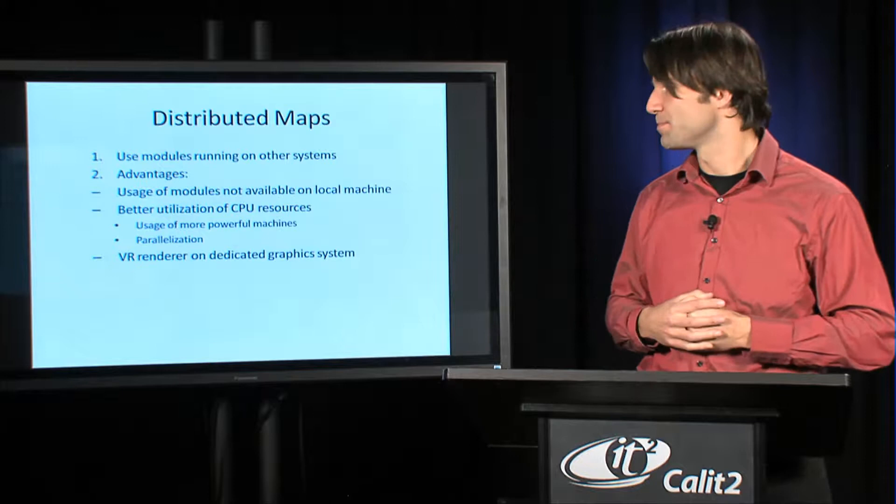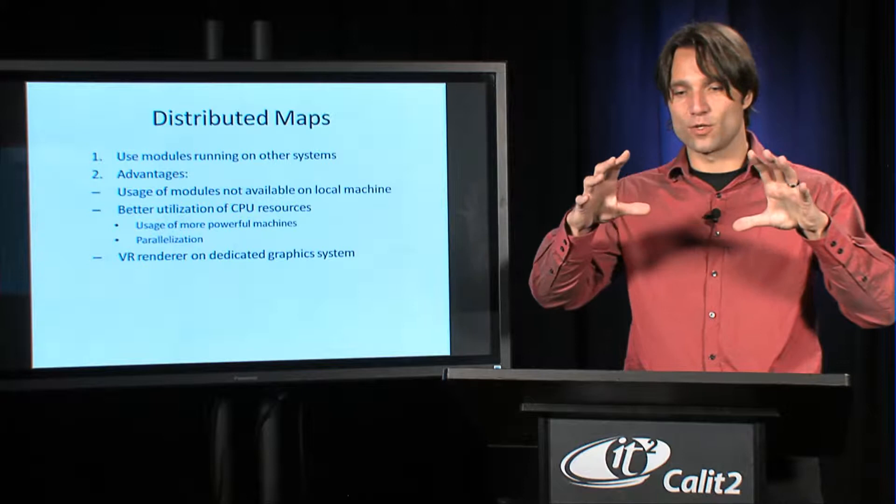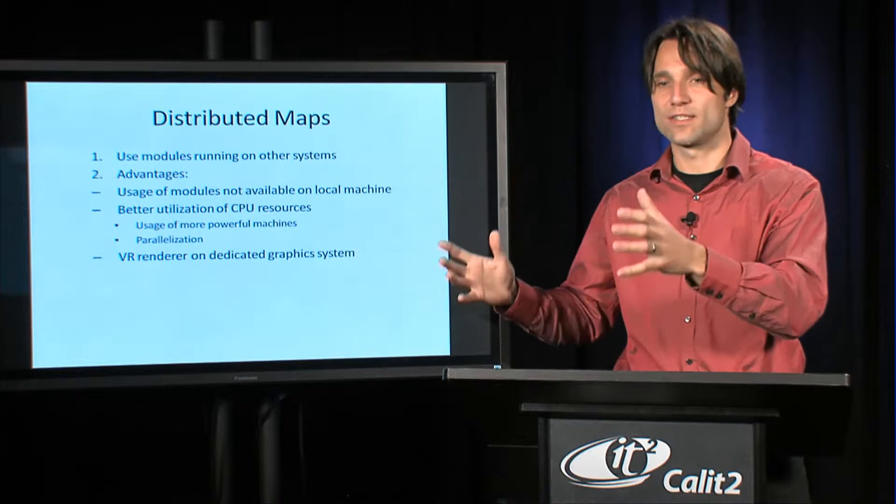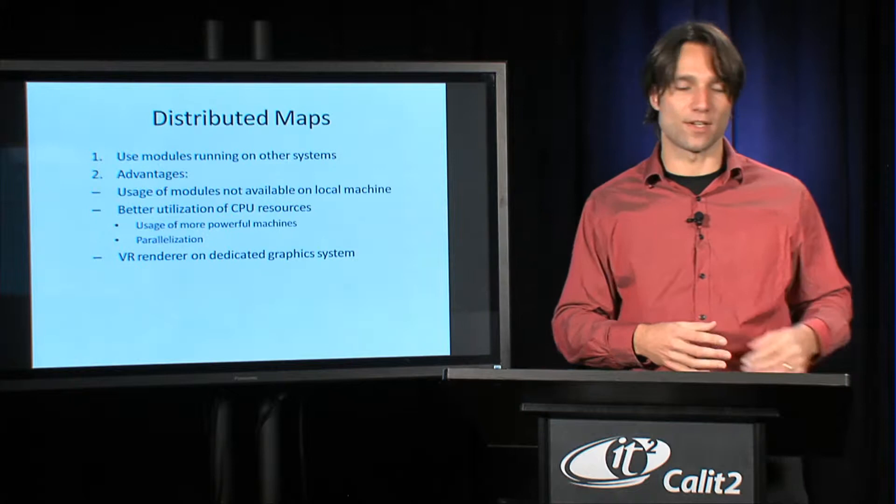Probably the most frequently used in our graphics world is the way that we would run our OpenCover renderer on a system where we have a Covice map and then the OpenCover renderer would actually run on a different system, which is the display system, the cave system. So that's a way to use distributed maps by doing all the data flow on one computer and then sending the result to a renderer on a different system.